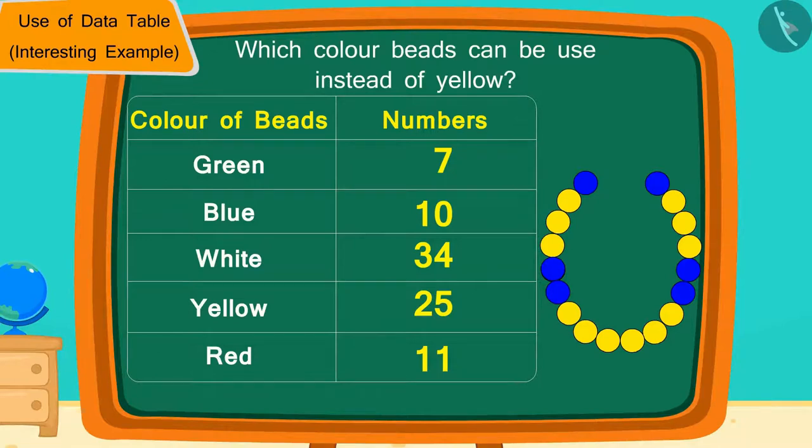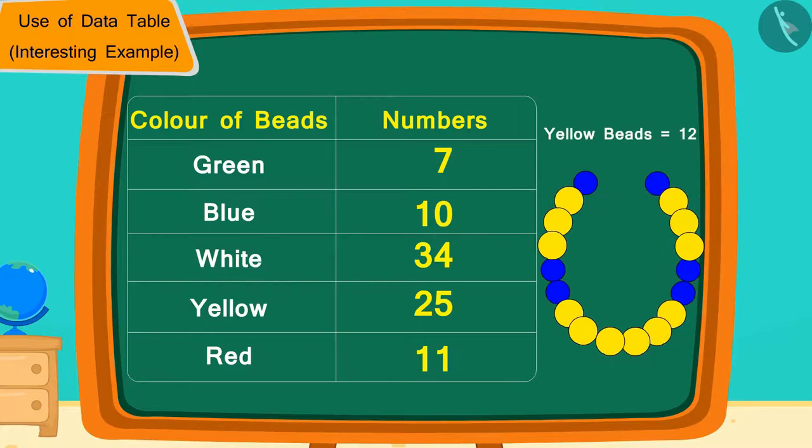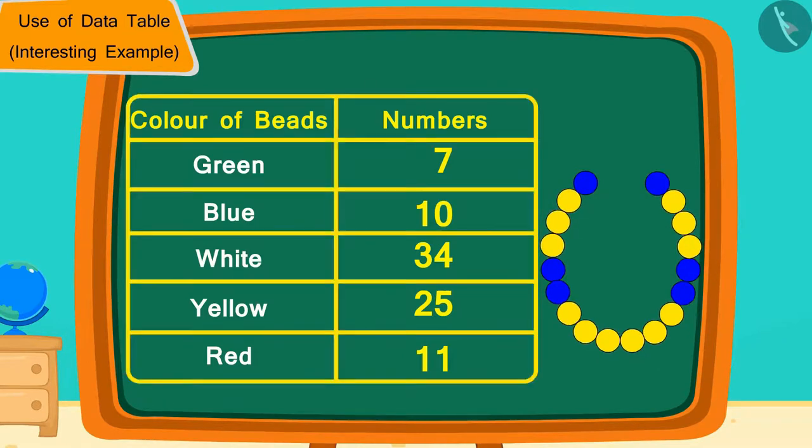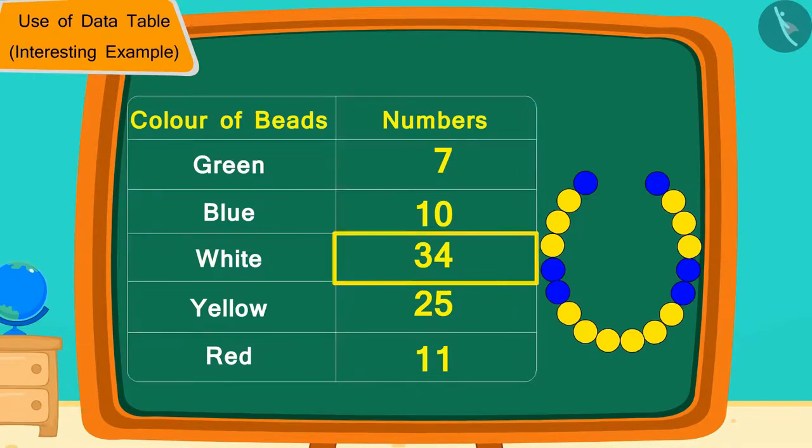That's correct. According to the design made by Golu, Chanda needs 12 yellow beads. We can see in the table that only 34 is more than 12,